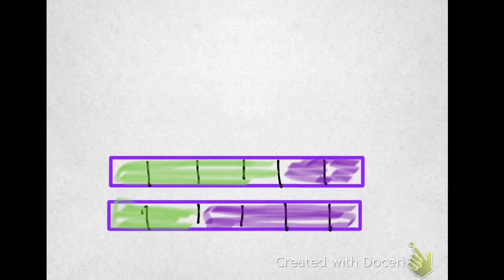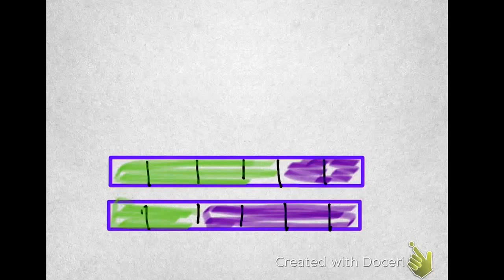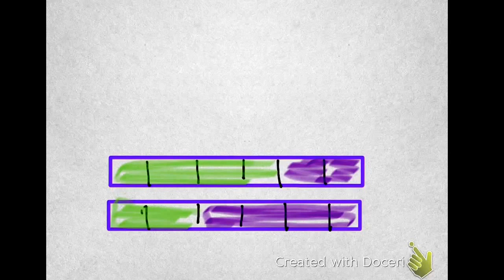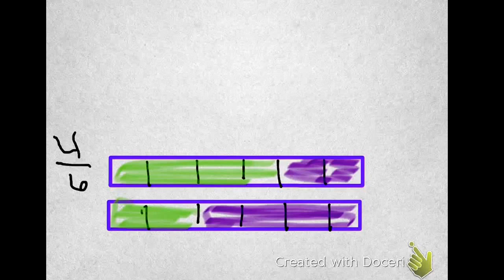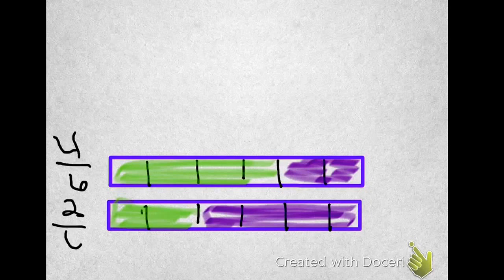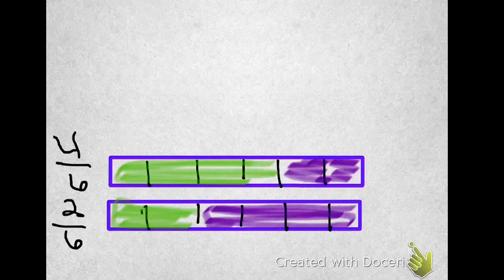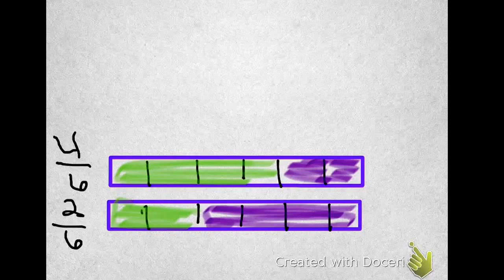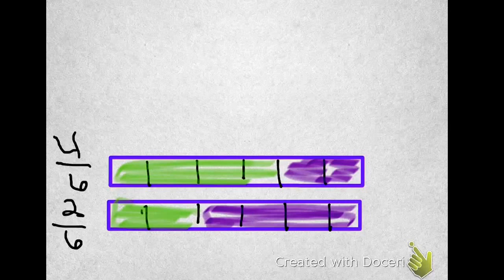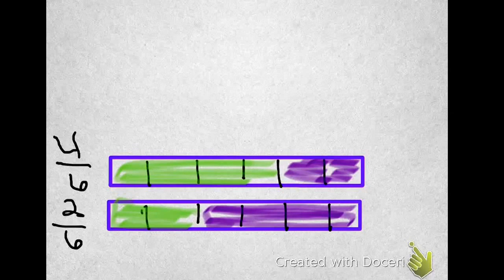Here we have two scarves that are the same size, except one scarf is 4 sixths green, and the other scarf is 2 sixths green. My question is, which is greater, 4 sixths or 2 sixths? Just by looking at it, we can figure out that 4 sixths is bigger than 2 sixths. But let's compare them side by side.